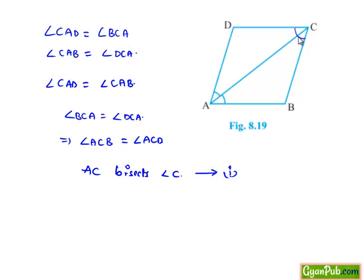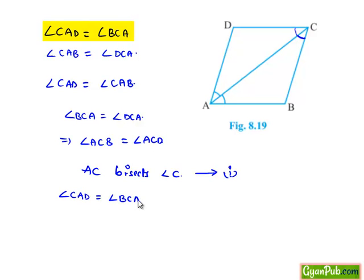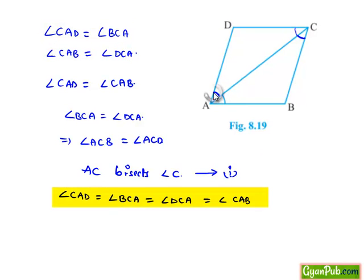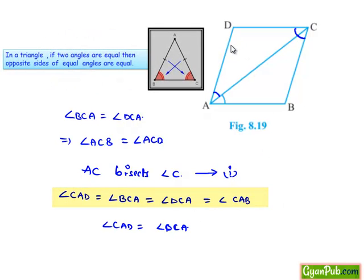Secondly, we have found that angle ACB is equal to angle ACD, and angle CAD is equal to angle CAB. We can equate: angle CAD = angle BCA = angle DCA = angle CAB. Now by considering angle CAD is equal to angle DCA, and applying the concept that sides opposite to equal angles are equal, we can say AB is equal to BC.